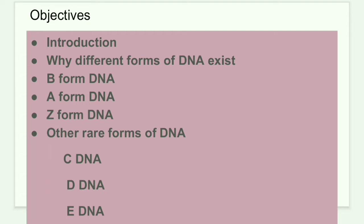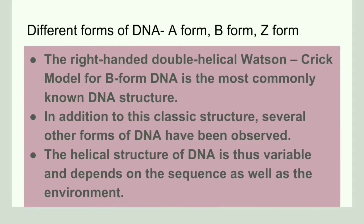If you haven't watched the video on the Watson and Crick model of DNA, please do watch it before you study the different forms of DNA. The most commonly known, or classical, DNA structure is B-form DNA — this is the Watson and Crick B-form DNA.